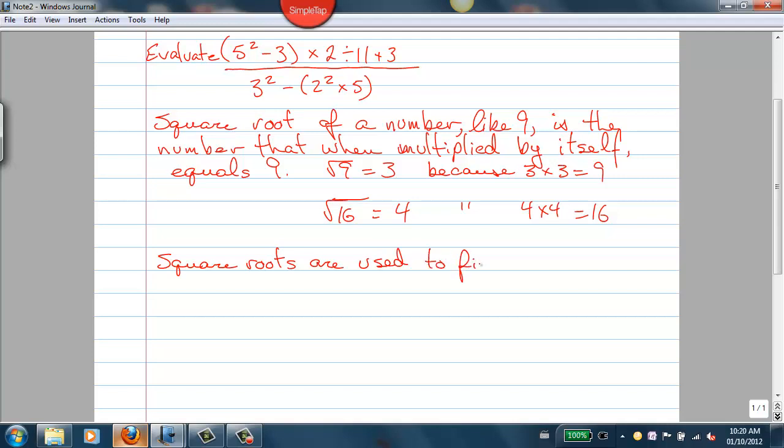So square roots can be used to find, for example, a missing side of a right triangle if we're using Pythagoras' theorem.